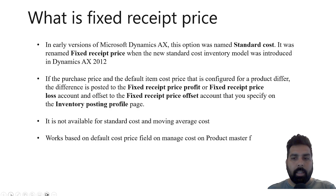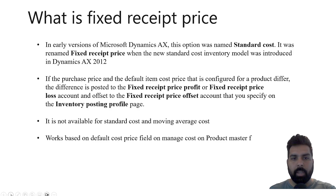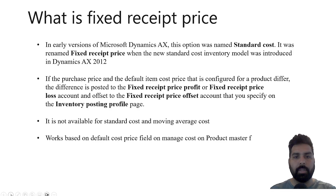That's the history and the logic behind this checkbox. What it does is work based on the item cost price which you define on the released product in managed cost. If your purchase price is different from the cost price defined there, it posts the difference into an account called the fixed receipt price profit or loss account, depending on the value specified. This checkbox cannot be used with standard cost or moving average cost. For this option to work, you need to have the price defined on your released product.